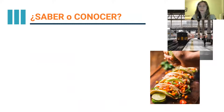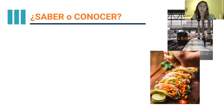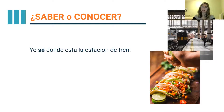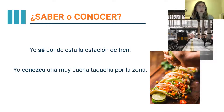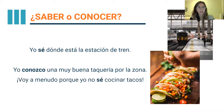These two verbs mean 'to know.' Pero ojo, careful — porque sus significados son un poco distintos — their meanings are a little different. So we're going to see some examples, and I want you to pay attention to the differences. Our first example: Yo sé dónde está la estación de tren — I know where the train station is. Our second: Yo conozco una muy buena taquería por la zona — I know a really good taco shop in the area. And our last: Voy a menudo porque yo no sé cocinar tacos — I go there often because I don't know how to cook tacos.